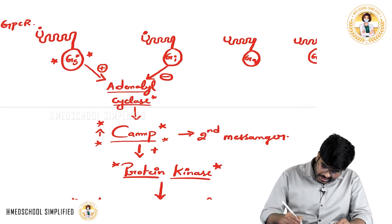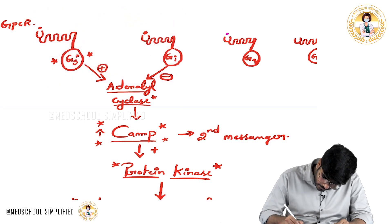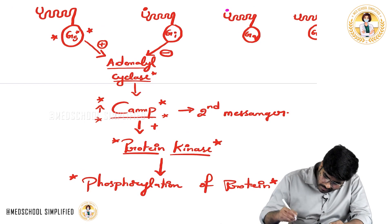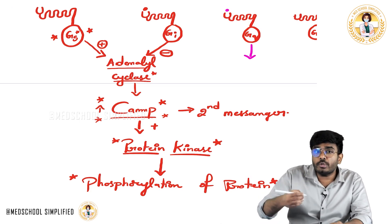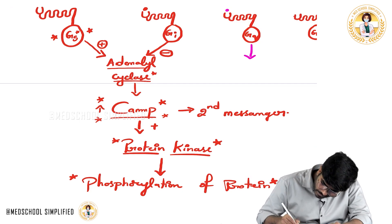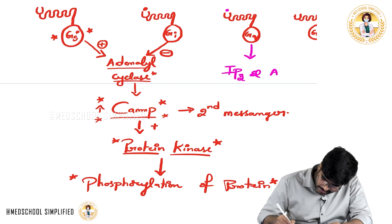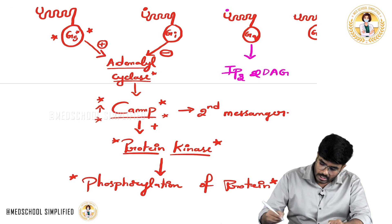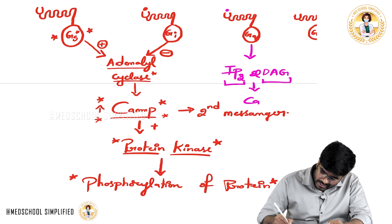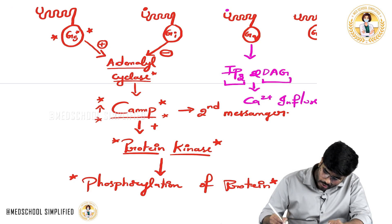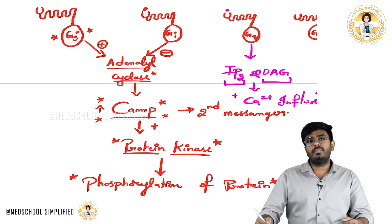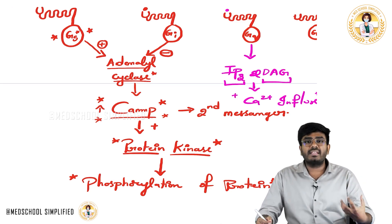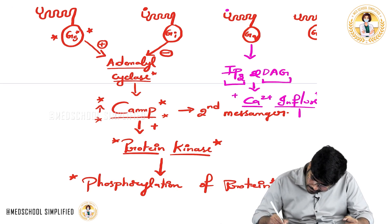What about Gq? Whenever you stimulate the Gq receptors, a different hormone acts on the Gq receptors. The Gq component activates secondary messengers inside the cell: IP3 (inositol triphosphate) and DAG (diacylglycerol). These IP3 and DAG cause influx of calcium into the cell. Calcium activates the enzymatic machinery, makes the cell active. So calcium is also acting as a secondary messenger.